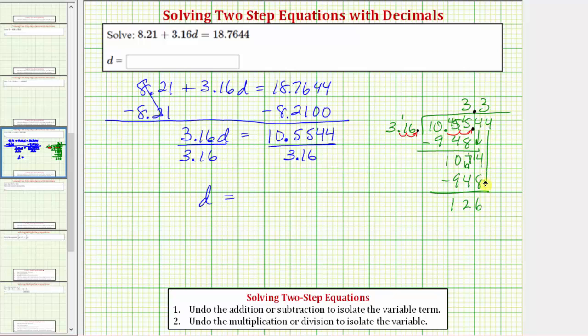Bring down the next digit, which is 4. And now we need to determine how many 316s are in 1,264. Well, we know 3 times 316 is 948. So let's see if there are 4 316s in 1,264. So multiplying, we have 4 times 6. That's 24. Perform an exchange with the 2. 4 times 1 is 4. Plus 2 is 6. And 4 times 3 is 12. Notice how there are exactly 4 316s in 1,264. Subtracting, the difference is zero. And therefore the quotient is 3.34.